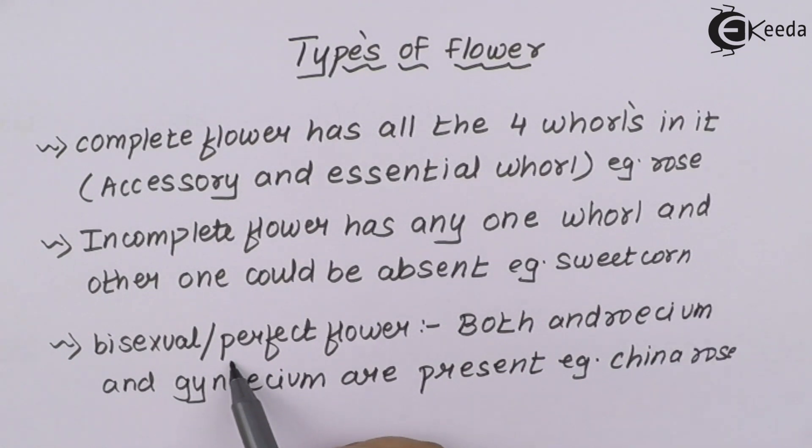When I say about bisexual flower or perfect flower, they have both the androecium and gynoecium present in them. Basically you can say both the essential whorls are present in them. China rose.